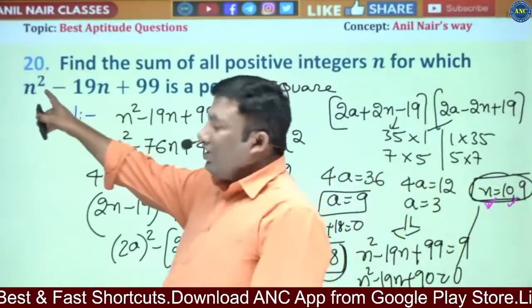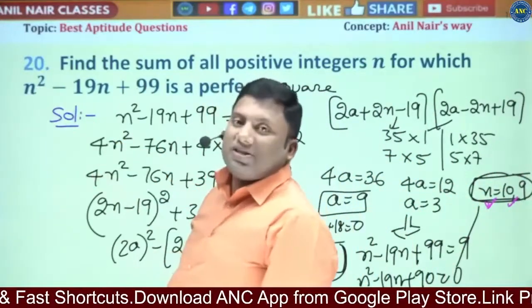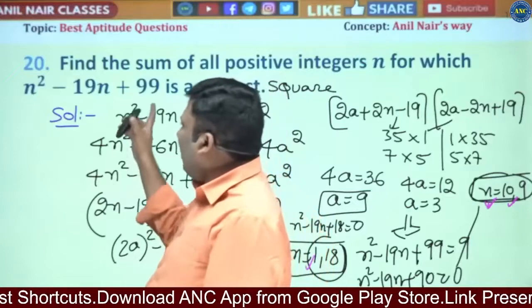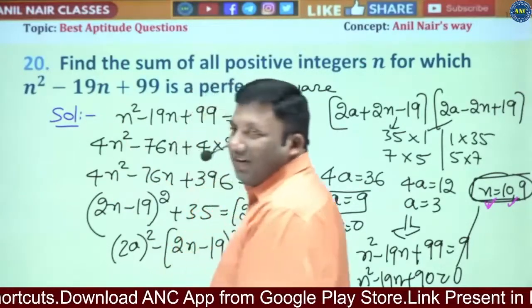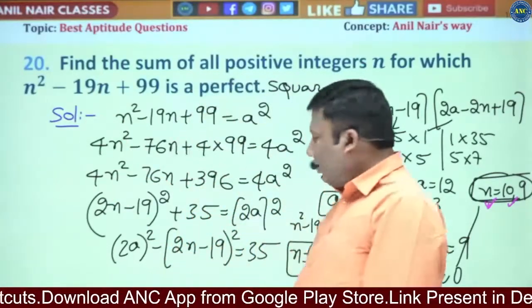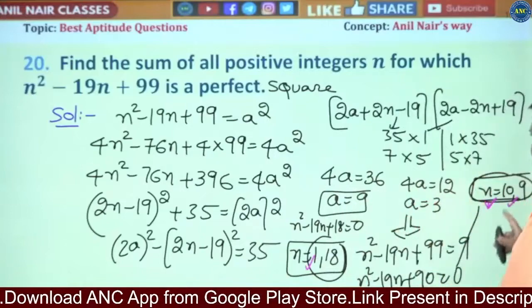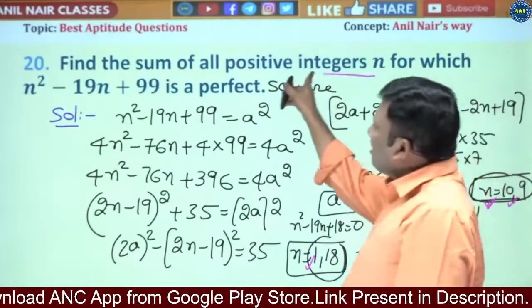9 squared is 81. 81 plus 99 gives 180 minus 171, which is 9. So N value 9 also gives a result. We have checked values 10 and 9. Now, what is the question?